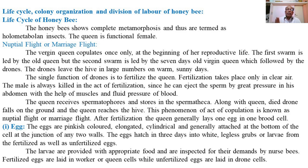The eggs of the honeybee are pinkish-colored, elongated, somewhat cylindrical, and slightly curved or bent structures. They generally remain attached at the bottom of the respective brood cell at the junction of two walls. The wax cells are hexagonal, each having six walls. The eggs hatch within three days.